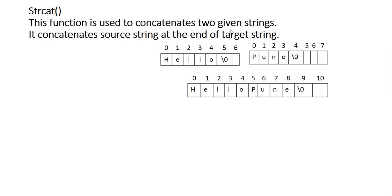This function is used to concatenate two given strings. Suppose first string is hello and second string is coding. This string shows with the location number 0 to 4 and the null character at the fifth location. Here also 0 to 3 and the null character at the fifth.